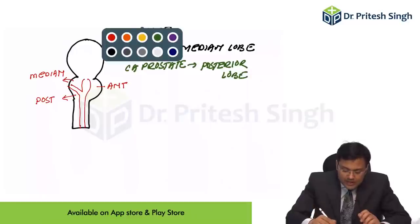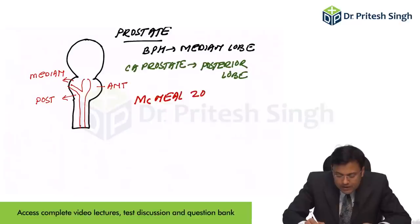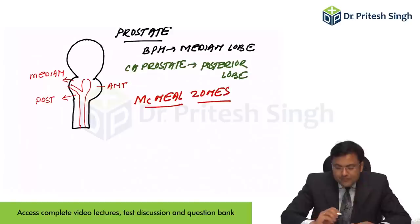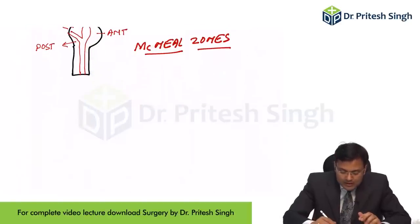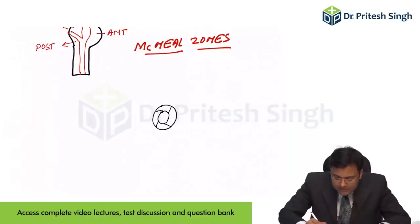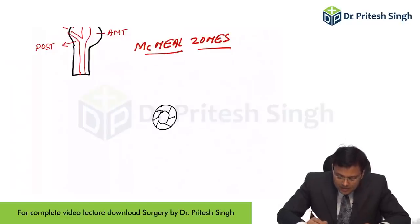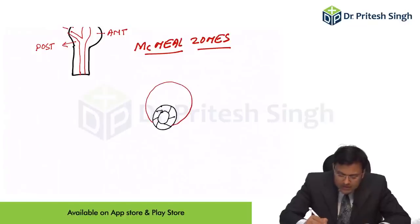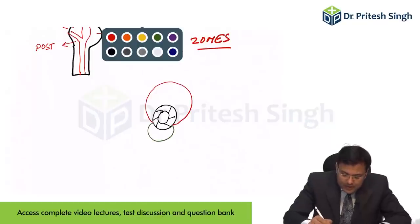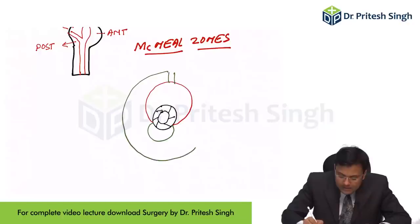The classification used nowadays is McNeal zones. In McNeal zones, this is the urethra. Around the urethra, there is periurethral muscles. Two-thirds of this urethra is covered by the transition zone, one-third is covered by the central zone, and peripherally there is the peripheral zone.